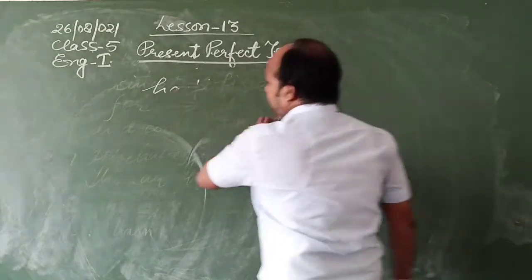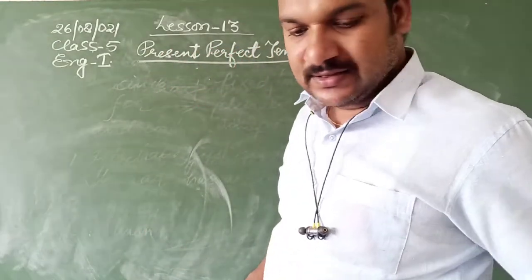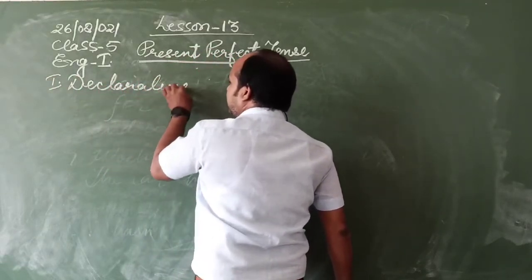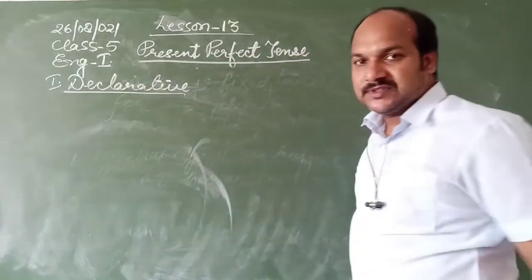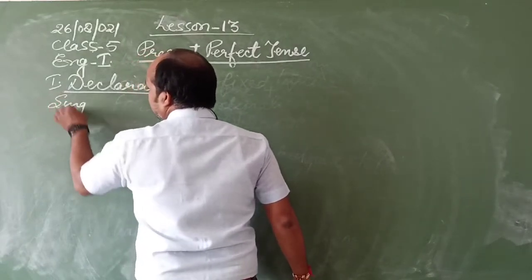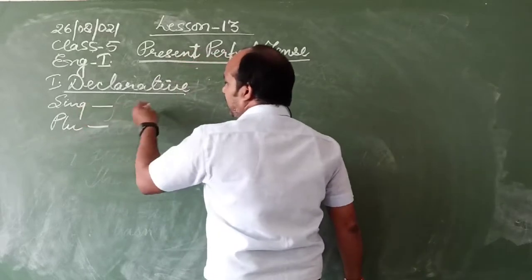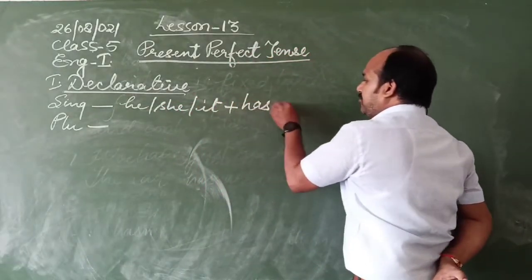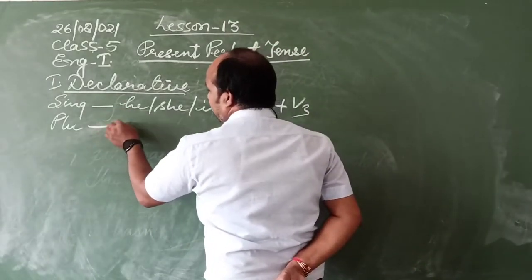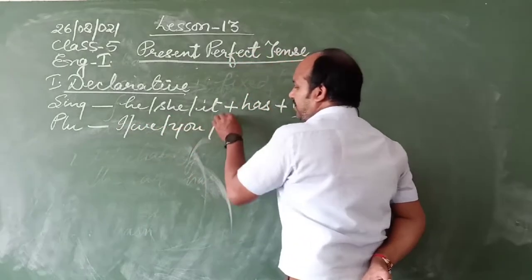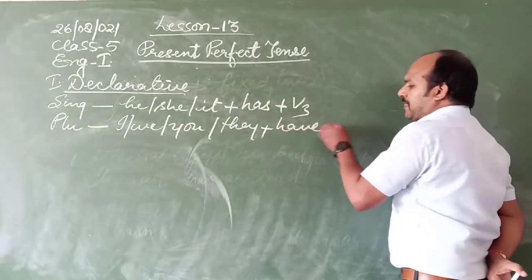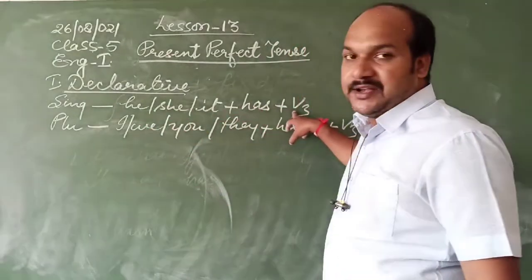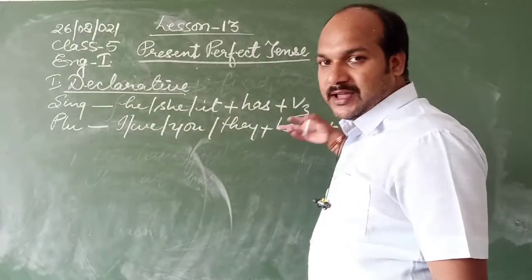Now we will see the structure systematically. First is the declarative sentence. For singular: he/she/it + has + third form of verb. For plural: I/we/you/they + have + third form of verb. For example: 'He has completed the work,' 'She has completed the work.'